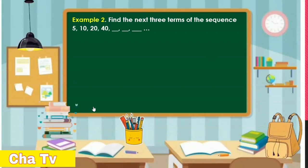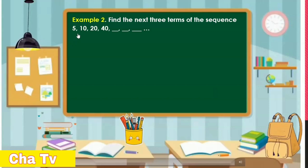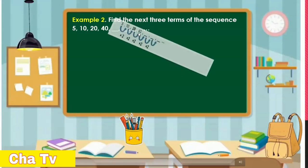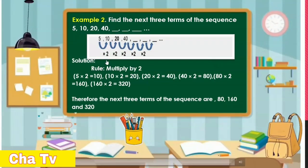For example number 2, find the next three terms of the sequence: 5, 10, 20, 40. The rule is multiply by 2. 5 times 2 equals 10, 10 times 2 is 20, 20 times 2 is 40, 40 times 2 is 80, 80 times 2 is 160, and 160 times 2 is 320. Therefore, the next three terms of the sequence are 80, 160, and 320.